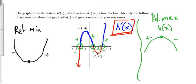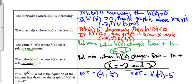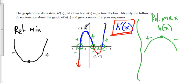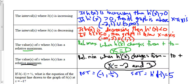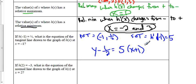If h(-1) = 1/2, what is the equation of the tangent line to the graph of h(x) at x = -1? The point of tangency is (-1, 1/2). From the graph of h'(x), h'(-1) = 5, which is the slope of the tangent line. Using point-slope form: y - 1/2 = 5(x + 1). Leave it in this form — do not rewrite as y =.